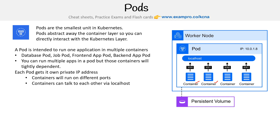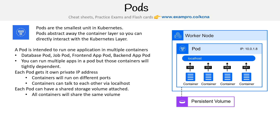Each pod gets its own private IP address. Look up here — there's an IP address, and containers will run on different ports. Notice here: 3000, 3001, 8080, 8081. Containers can talk to each other via localhost. If container one wants to talk to container two, all it has to do is talk to it on its port number on its own localhost. That is how simple communication is from container to container, which we'll talk about because we have a whole section on different types of cluster communication.